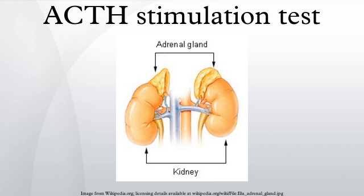Interpretation of results — Cortisol stimulation: In healthy individuals, the cortisol level should double from a baseline of 20–30 micrograms/dL within 60 minutes. For example, if the serum cortisol level was 25 micrograms/dL before the stimulation, it should reach at least 50 micrograms/dL. For primary adrenal insufficiency and Addison's disease, the baseline cortisol level is usually near 15 micrograms/dL. An ACTH stimulation test that raises cortisol to 20 micrograms/dL would support the diagnosis of primary adrenal insufficiency. In Addison's disease, baseline cortisol is well below 10 micrograms/dL and rises no more than 25%.